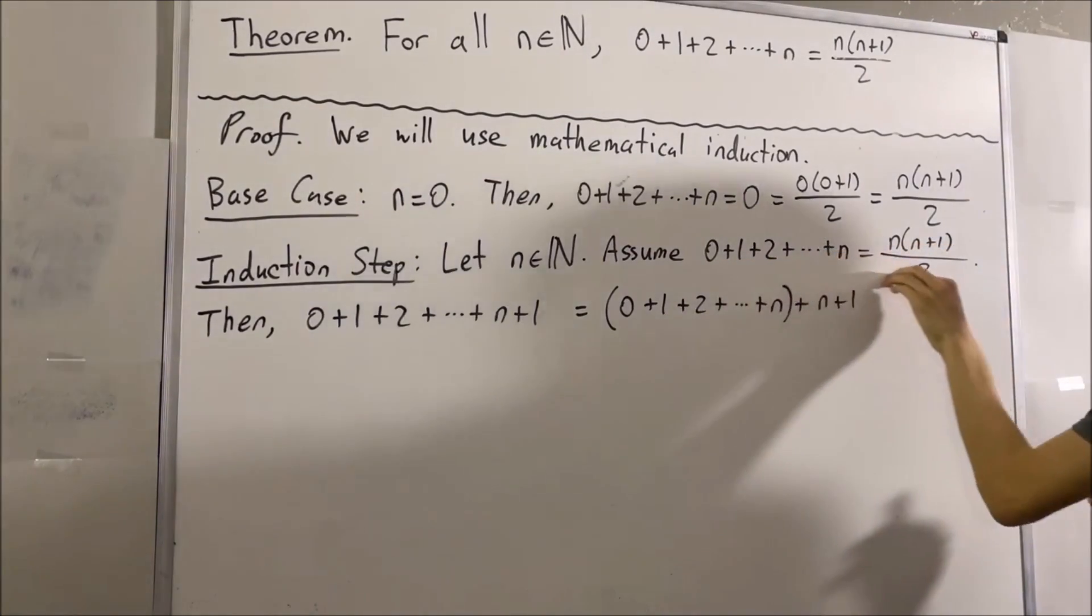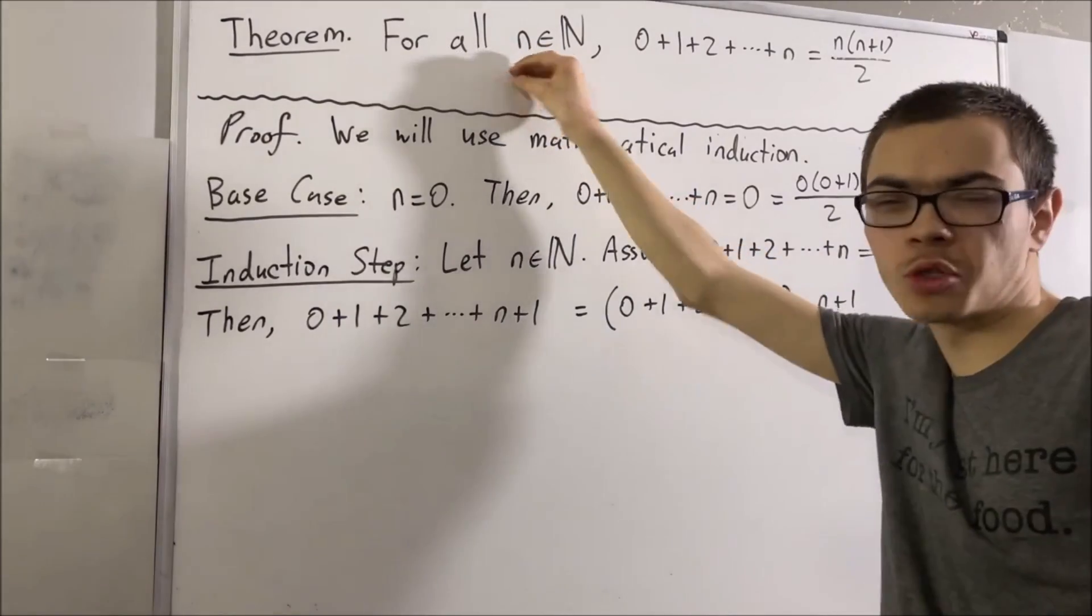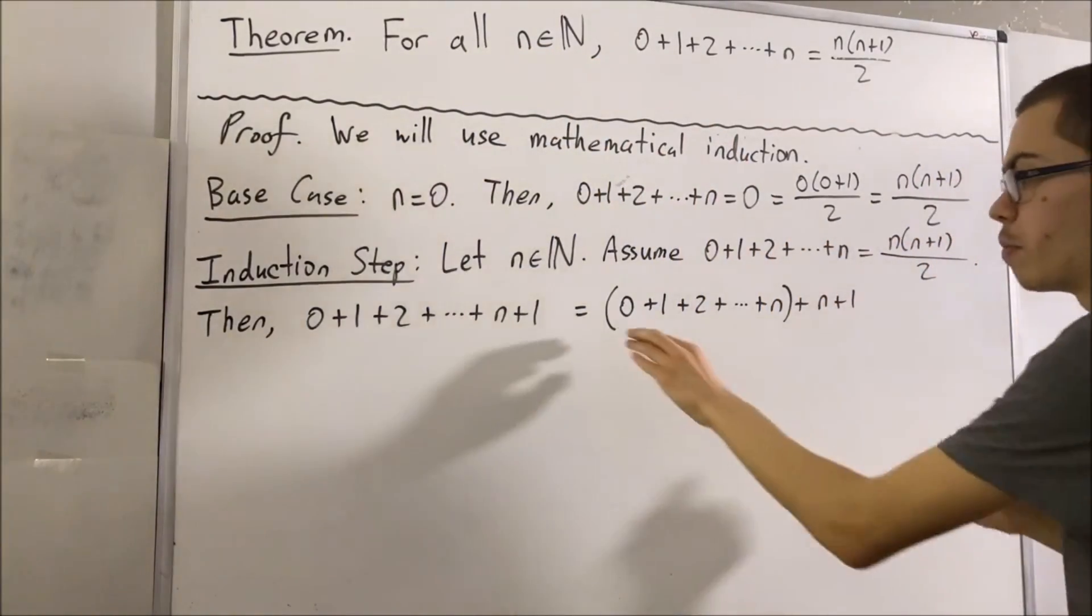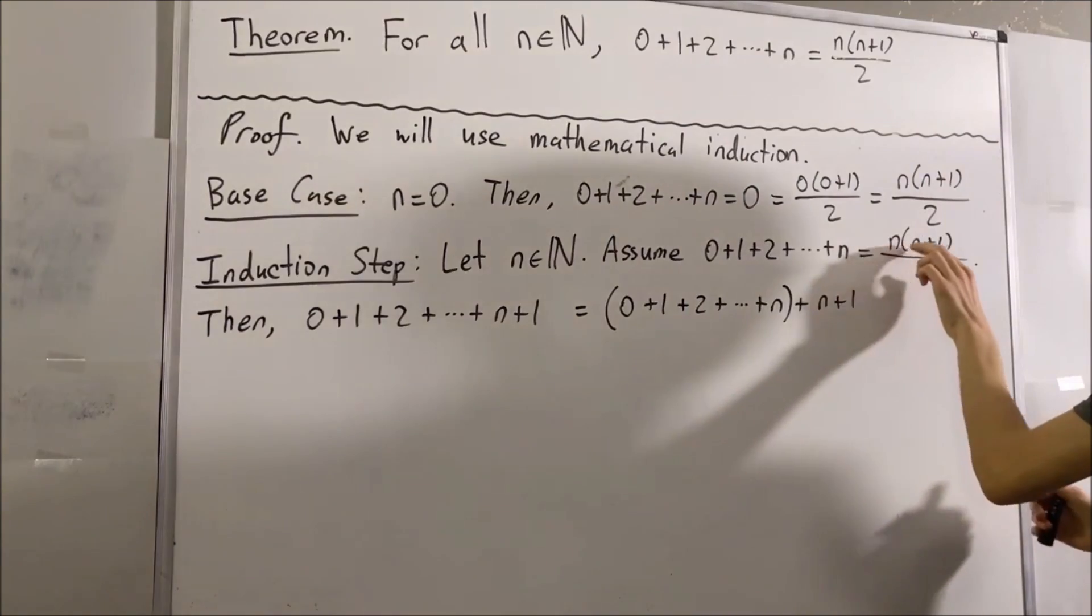Right, because this is the thing that we are assuming about the arbitrary natural number that we picked out. So really, I can replace the parentheses with n times n plus 1 over 2.